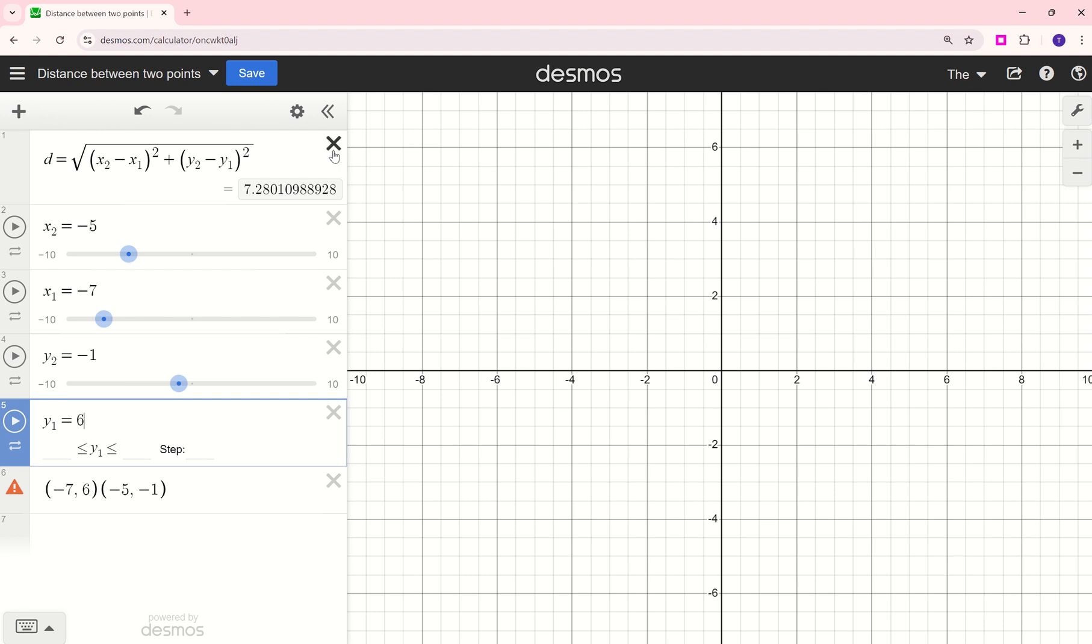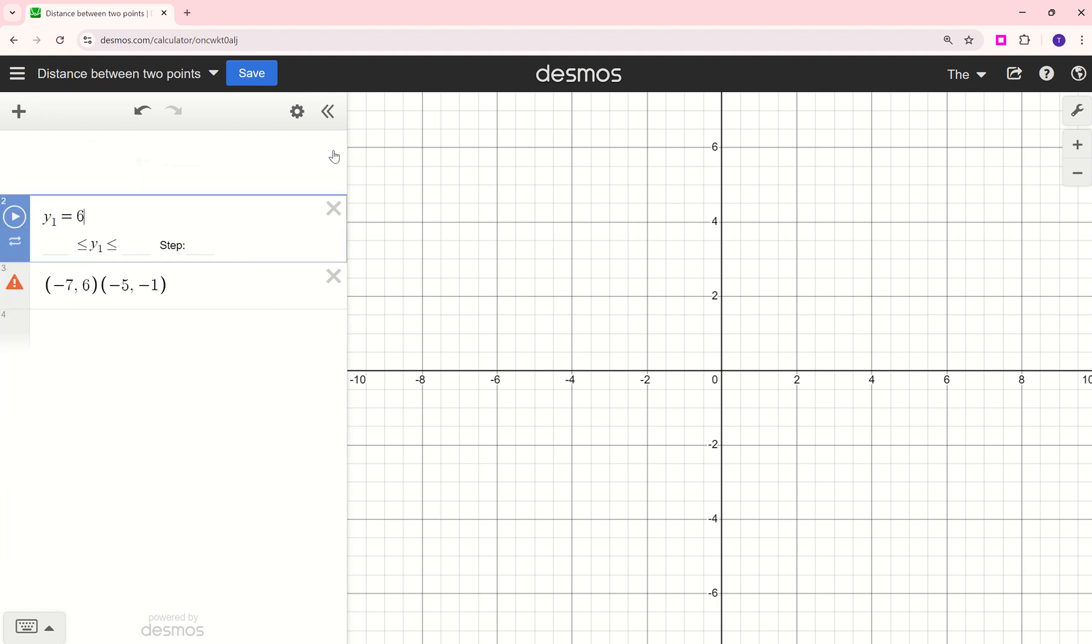The other option, which may or may not be available to you depending on which version of Desmos you're using. In this Desmos demo, I'm using the full version. There is a built-in function called distance. So when I type in letters, they come out italicized. However, when I type in a function, you'll notice that when I hit that E right there, this format, the font changes to a regular font, and that's how I know I'm using a built-in function.